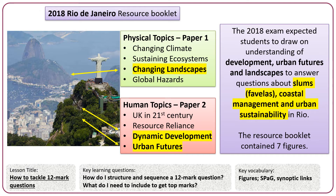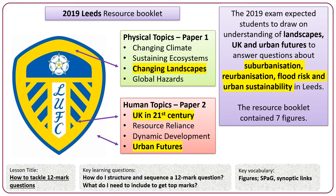In 2018 there was a Rio de Janeiro paper 3 with three main topics — landscapes, development, and urban futures — and students answered questions about slums, favelas, coastal management, and urban sustainability in Rio. That booklet was shorter with seven figures. In 2019 there was a Leeds resource booklet based on the city of Leeds in Northern England, again with three topics — landscapes, UK, and urban futures — where students drew on keywords from those topics to write about suburbanisation, re-urbanisation, flood risk, and urban sustainability. That booklet contained seven figures.